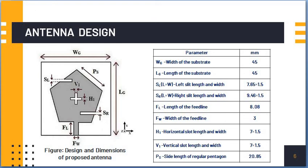V1 and H1 are the slots that are placed perpendicular to each other at the center of the pentagon patch antenna. The antenna without any slits and slots resonates at 1.95 GHz. After inserting the slits and slots, the antenna resonates at 2.5 GHz and 3.5 GHz.